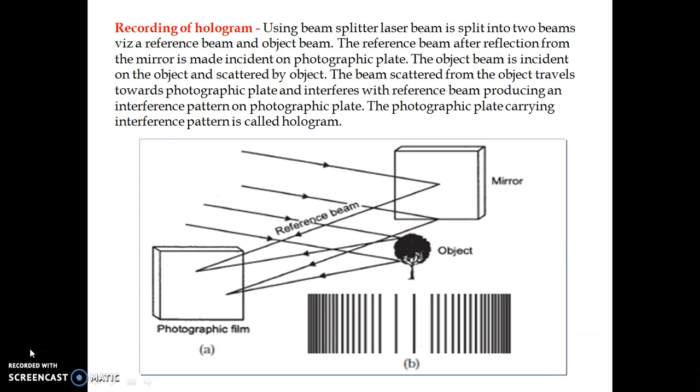There are two steps. One step is recording of hologram. Now you can see here we have the laser beam and that laser beam is split into two beams. One incident on mirror, it is reflected from mirror - we call it as a reference beam. And you can see here one tree-like object is shown here. The other beam, the second beam, incident on object and it is scattered by the object - it is called object beam.